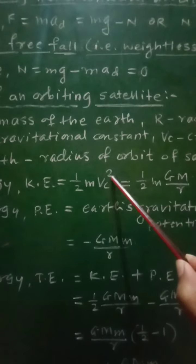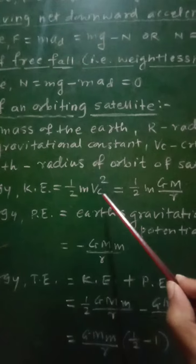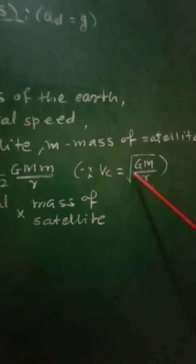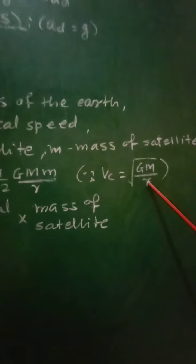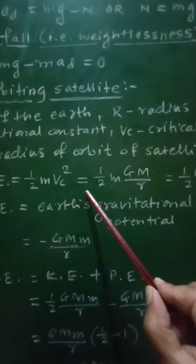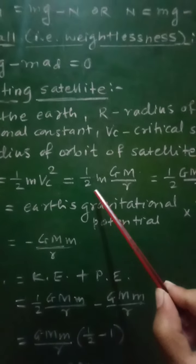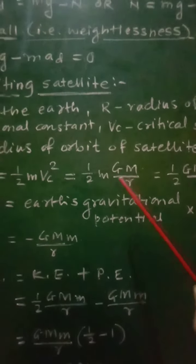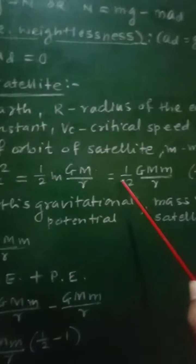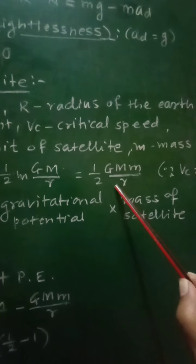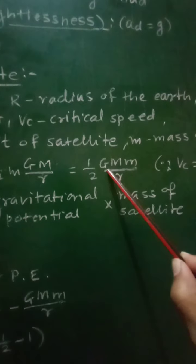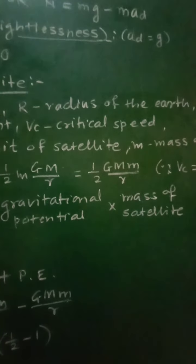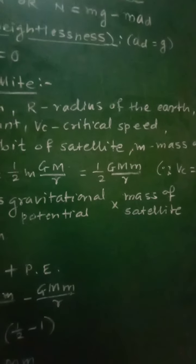When the satellite is revolving around the Earth, it possesses both kinetic energy and potential energy. Due to its motion it has kinetic energy, and due to Earth's gravitational potential it has potential energy. The kinetic energy is KE equals half m Vc squared. Since critical velocity Vc equals square root of GM upon r, substituting gives KE equals half GMm upon r.